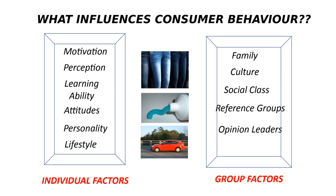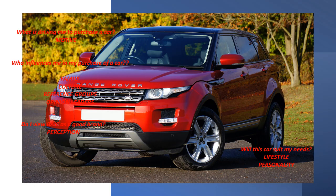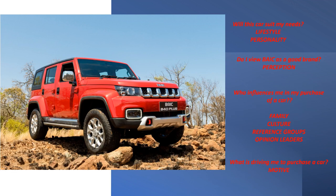I've got some little examples on the screen — jeans, toothpaste, a car, food. For our POE, we are looking at the bike, and there's a nice example showing one of the models in South Africa. What we're going to do is look at some of the factors that will actually influence the purchasing of a car. These include lifestyle, personality, perception, family, culture, and the motives that stimulate me to purchase a car.